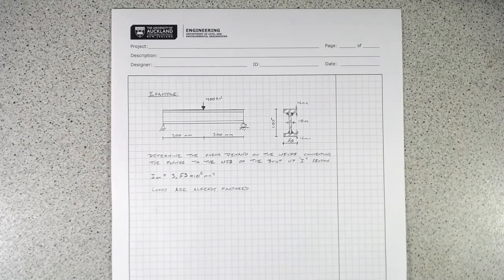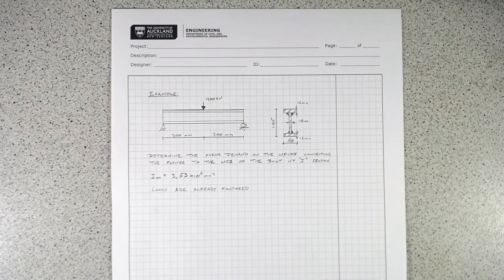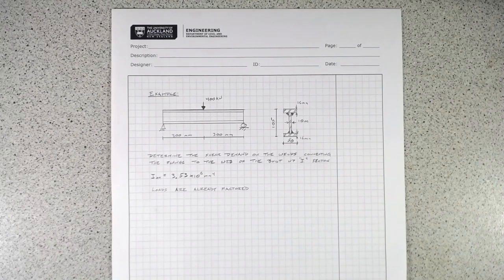We are continuing our investigation on shear design using the code equations in NZS 3404, the New Zealand steel design standard. This is the first of a number of examples where we'll look at how to design for shear using these standards.